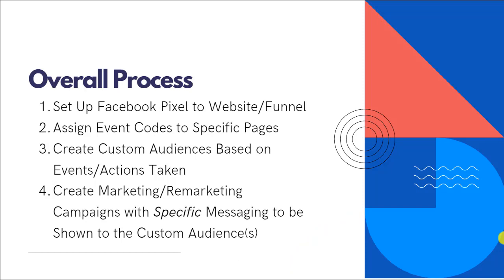The overall process includes first setting up your pixel to your website or your funnel. Then you want to assign specific event codes to pages in your website or funnel, so Facebook knows when somebody visits a page, when they submit their information to become a lead, add something to their cart, or make a purchase. After that, you create your custom audiences based on the different events or actions that people take. Then, with your audiences built and Facebook constantly collecting data, you create marketing or remarketing campaigns with specific messaging shown to those customers, dependent on where that person is in your marketing and sales process.